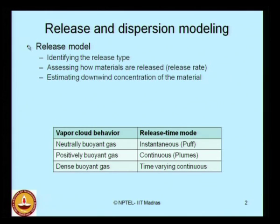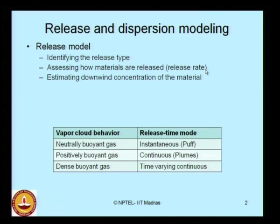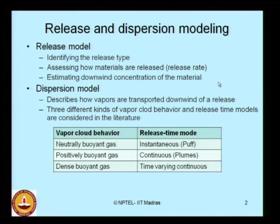For the release models, the following steps are generally done: identify the release type, assess how materials are released — what we call the release rate — then estimate the downwind concentration of the material. Dispersion models describe how vapors are transported downwind of a release.